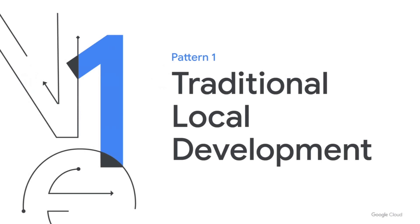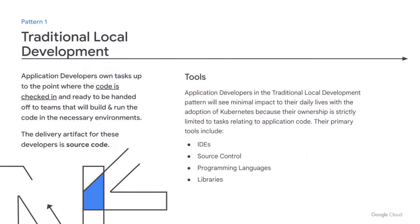To start, let's talk about what I call the traditional local development pattern. In traditional local development, app devs own tasks up to the point where code is checked in and ready to be handed off to teams that will build and run that code in the necessary environments. The delivery artifact for these developers is source code. They write code, check it into source control, and that's pretty much where their ownership ends. That code will still need to be built and deployed onto hardware, but those responsibilities are not owned by the average developer. This is how most organizations have traditionally scoped the application developer role.